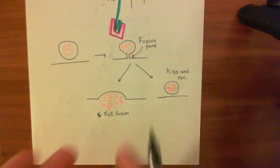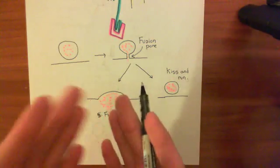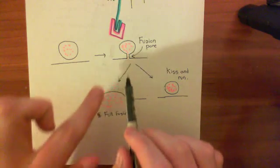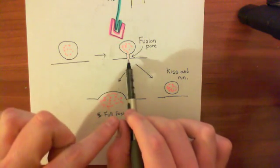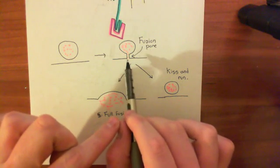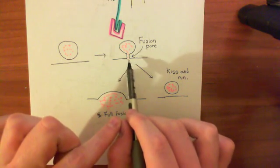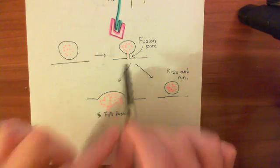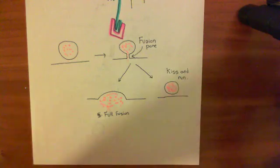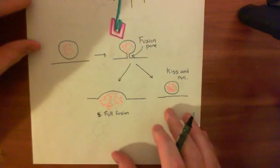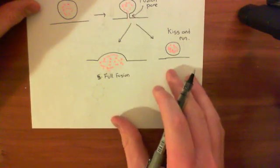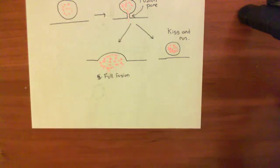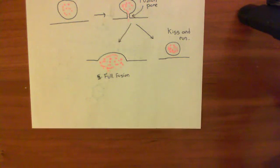A few bits of evidence for this: we can actually see these fusion pores. To give some examples, let's look at neurons in the posterior pituitary.